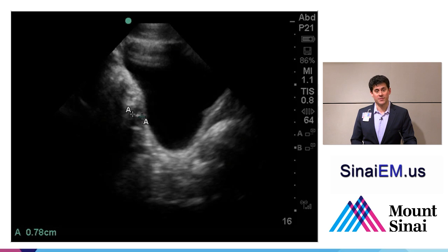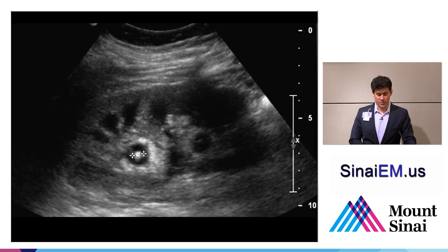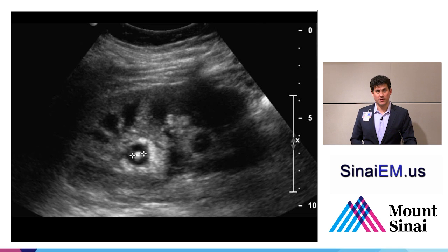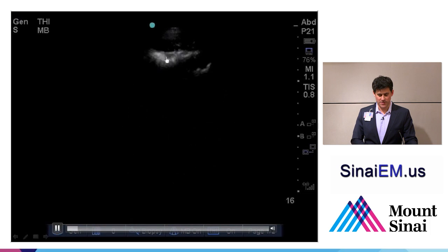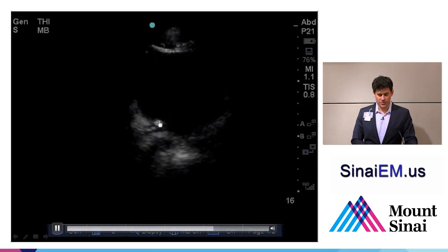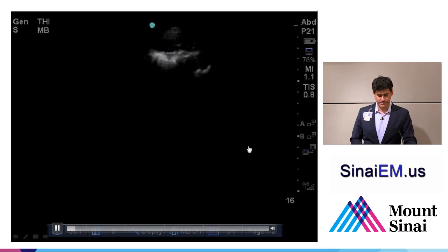Typically the places you'll find stones are in the renal parenchyma itself, trapped at an area like the UVJ, or floating inside the bladder. Here we see a stone in the renal parenchyma itself. Don't be misled clinically — many people have renal parenchymal stones and are asymptomatic. Be cautious about attributing all symptoms to renal colic just because there's a stone in the kidney, as a broader differential should be considered without other evidence of obstruction.